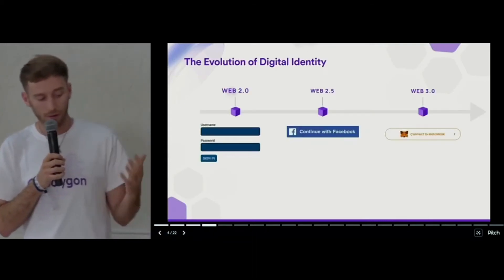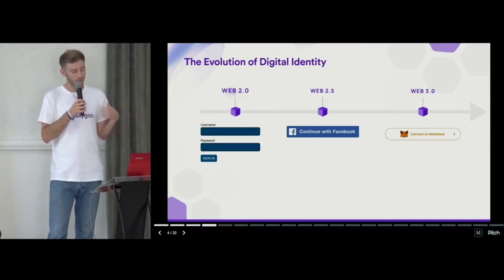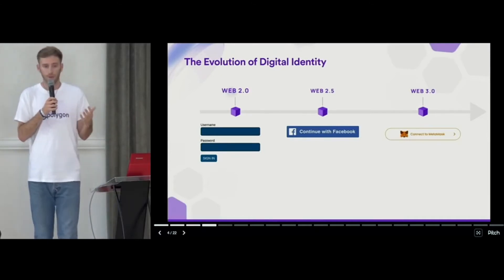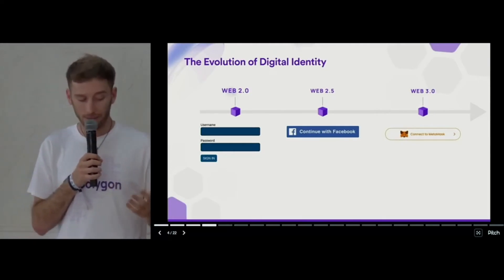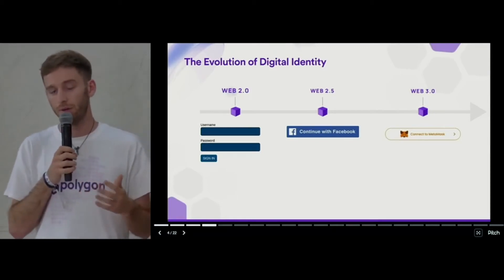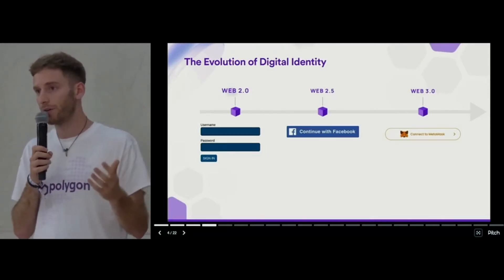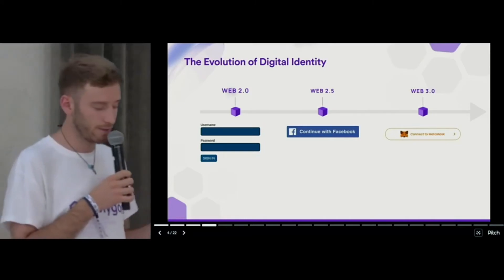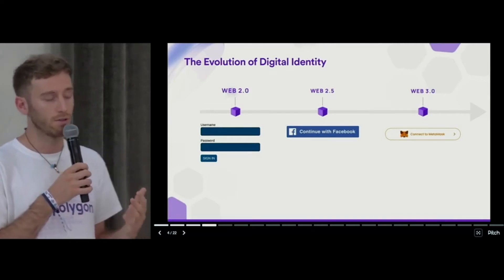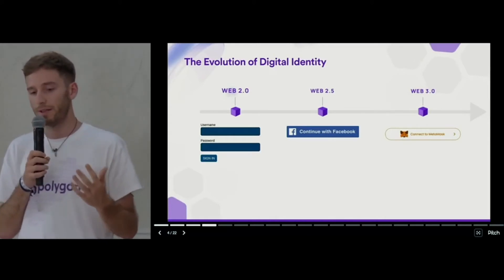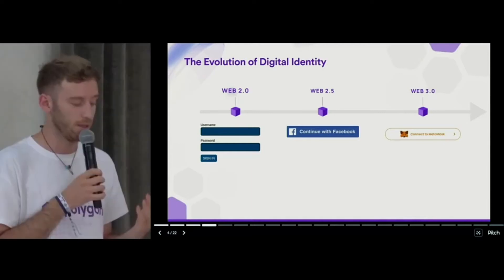So how has digital identity evolved through time? We started with the normal username and password login. We moved to login with Facebook, login with Twitter, and now we've got to connect with MetaMask — connect with your wallet, basically. What we accomplished is really cool. Now we have data portability, so you can bring your own assets across platforms. You don't have the burden of passwords, and you have actual ownership of data. In the wallet, you store your own keys, and this gives you the possibility to prove that the data are actually owned by yourself.